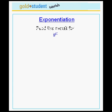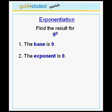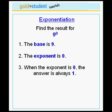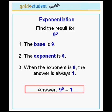Let's do some examples. Let's find the result for 9 to the power 0. This is one of our special rules. We have the base is 9, but the exponent is 0. Because of the special rule for when the exponent is 0, the answer is always 1. Therefore, 9 to the power 0 is equal to 1.